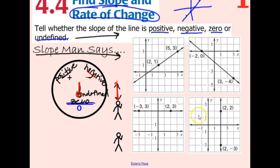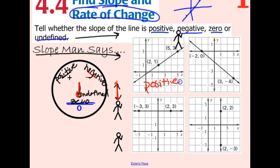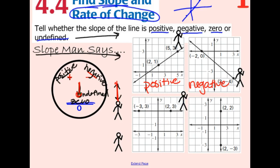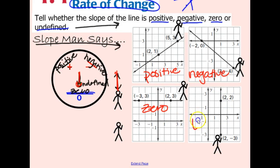So tell whether the slope of these lines are positive, negative, zero, or undefined. Looking at the top left one, slope man would be walking from left to right uphill, so this is a positive slope. In the next one, slope man would be starting on the left and walking downhill, so this is a negative slope. The next slope, we would be walking flat straight across - this is a slope of zero. And the last one, you can't walk on that line; he would fall straight down, so that would be an undefined slope.